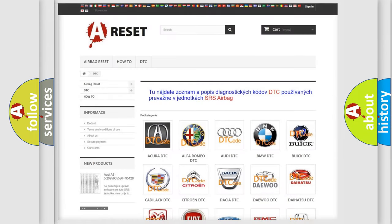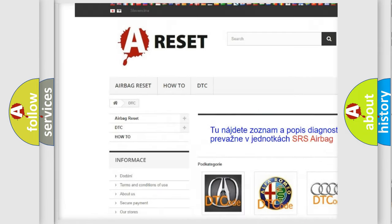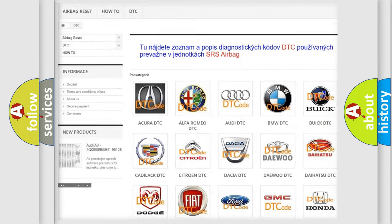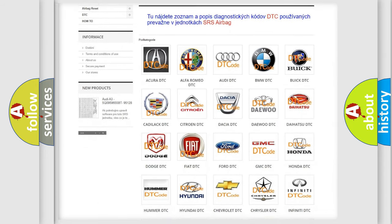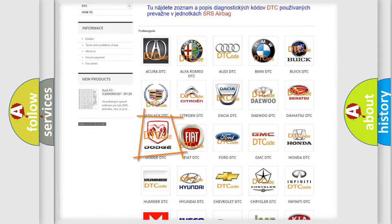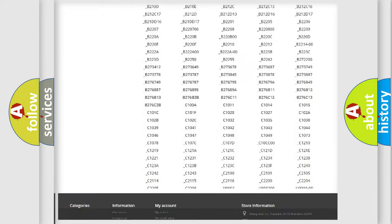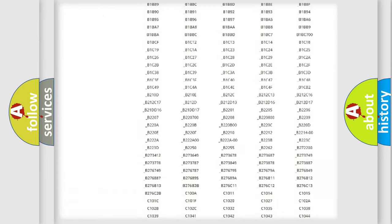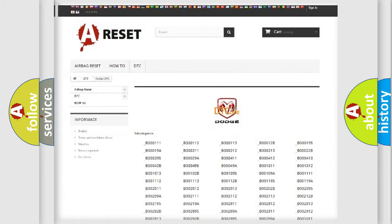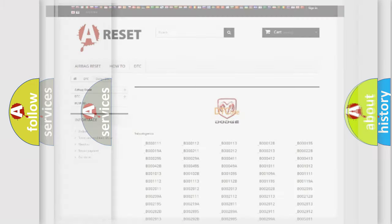Our website airbagreset.sk produces useful videos for you. You do not have to go through the OBD2 protocol anymore to know how to troubleshoot any car breakdown. You will find all the diagnostic codes that can be diagnosed in Dodge vehicles, and also many other useful things.